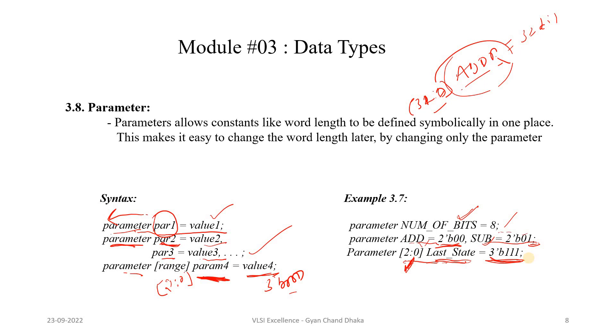If there is a constant which is repeatedly used in many places in a design, that constant we can replace with the parameter value and we can define the parameter value at a single place. In future, if we have to change that constant value, we don't have to go and change it at every place. We can just change the parameter value and it will be reflected everywhere.